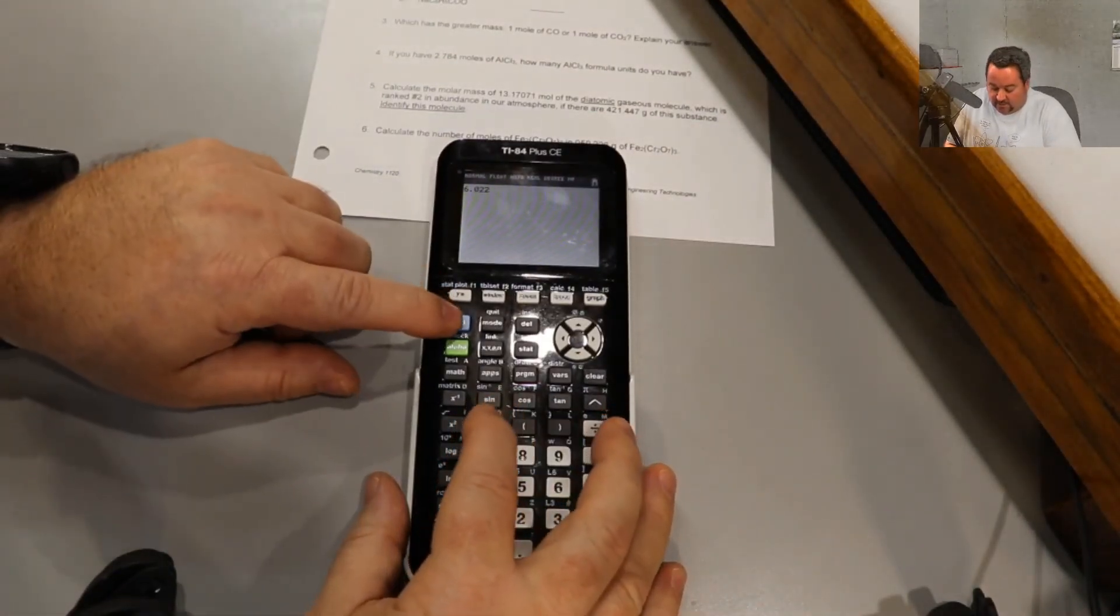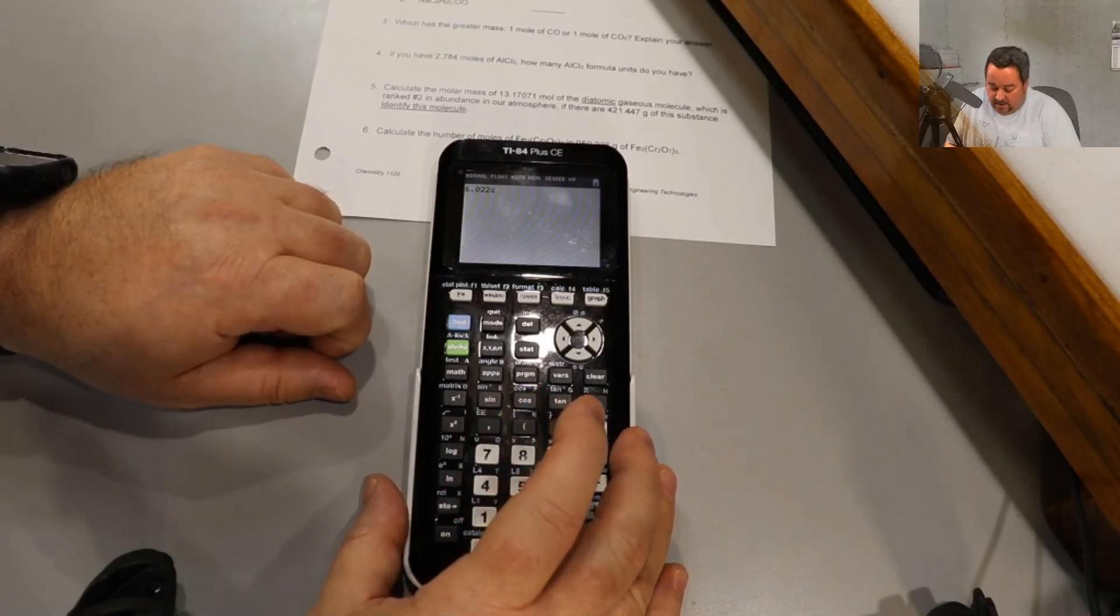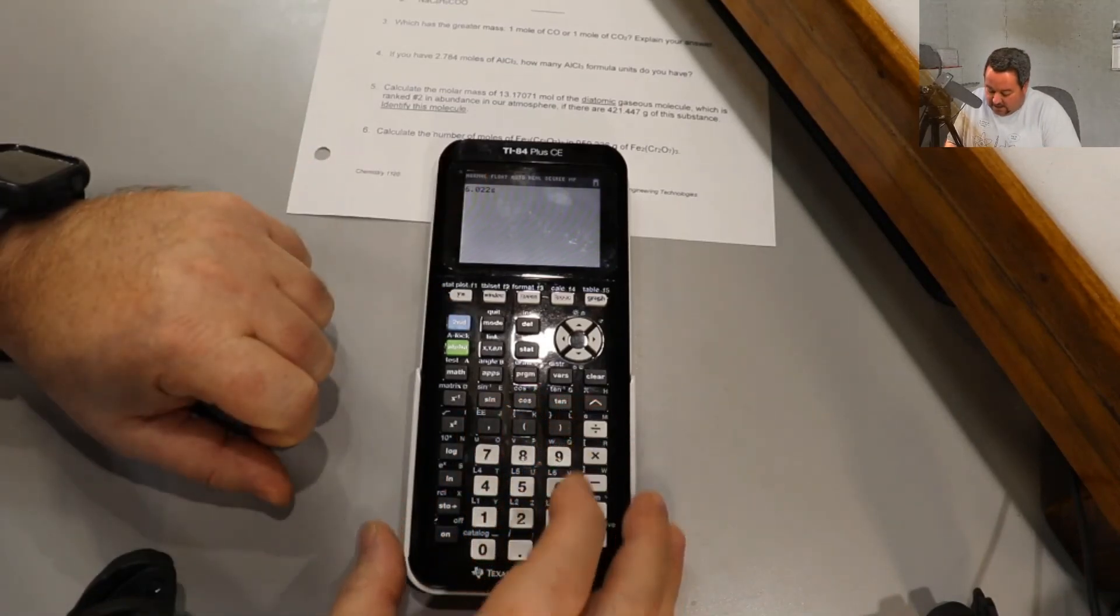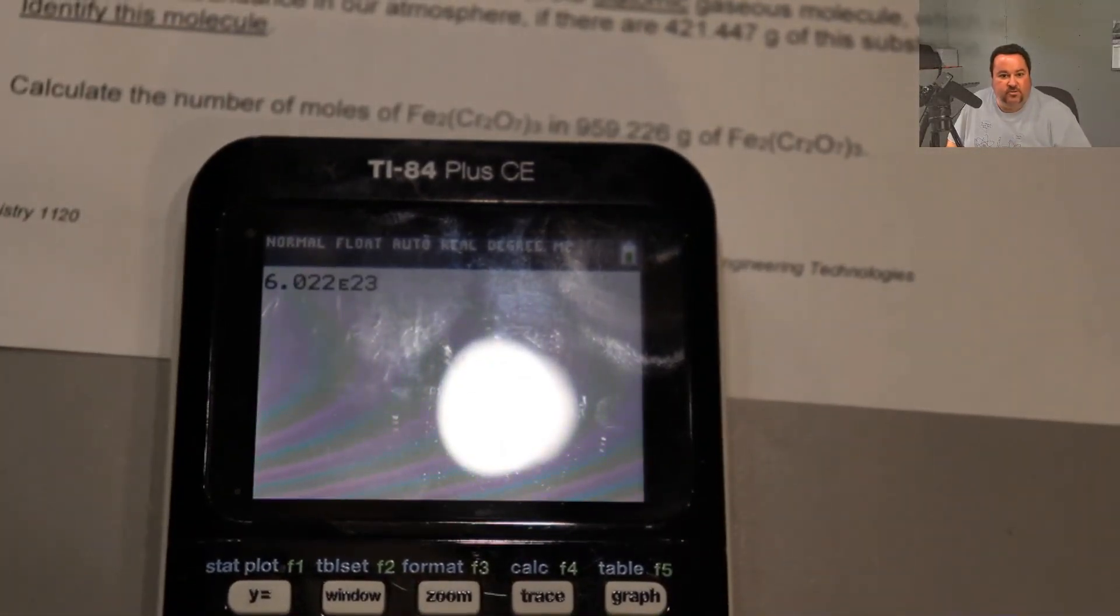The way that the TI was intended to be used is for you to use the EE key, and it will display E 23. The calculator sees this as 6.022 times 10 to the power of 23.